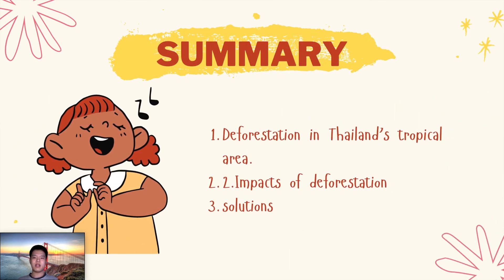In summary, here is a recap of our presentation. Deforestation has expanded over 20 years in Thailand, and it is caused by urbanization and industrialization. Deforestation can impact climate change, rising temperature, and affect the amount and distribution of rainfall. The solution of deforestation can be conducting good natural resources management for companies, and using recycled products as a replacement for products made from natural resources.